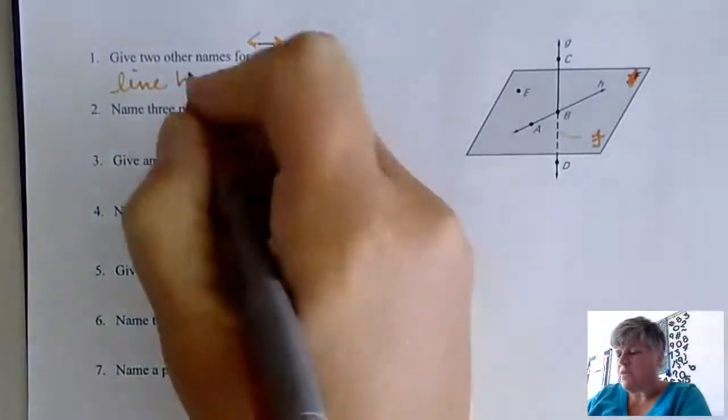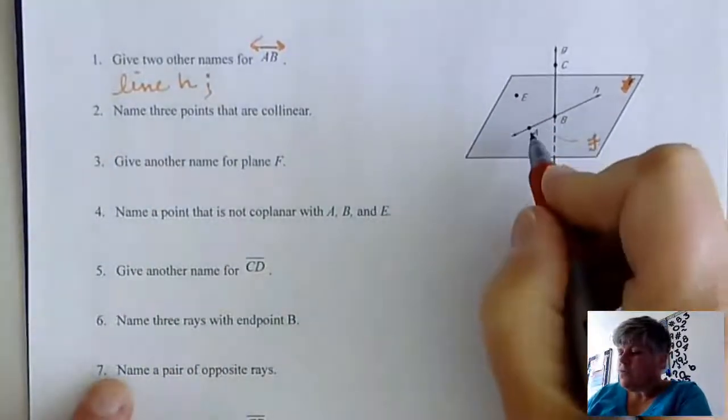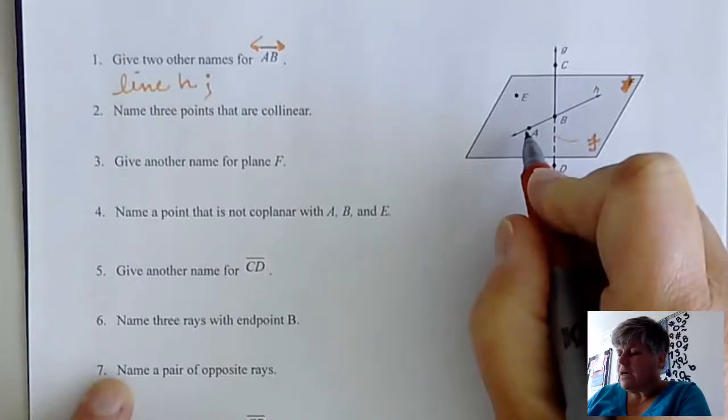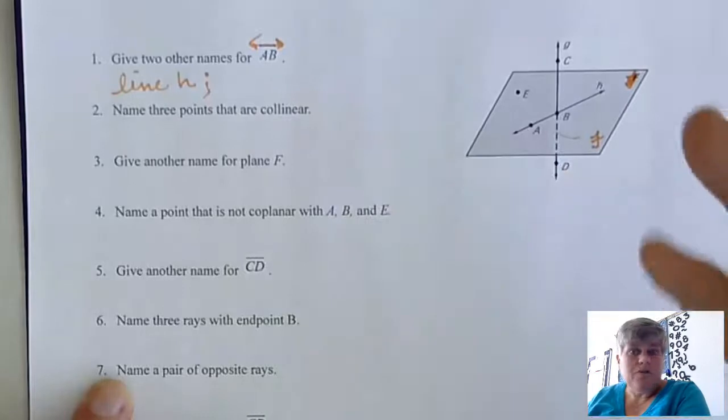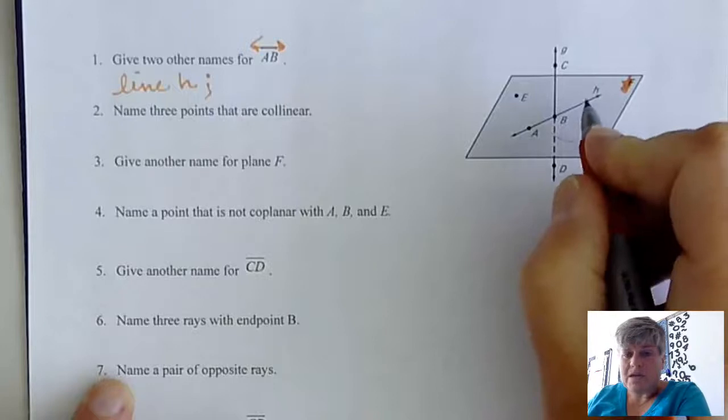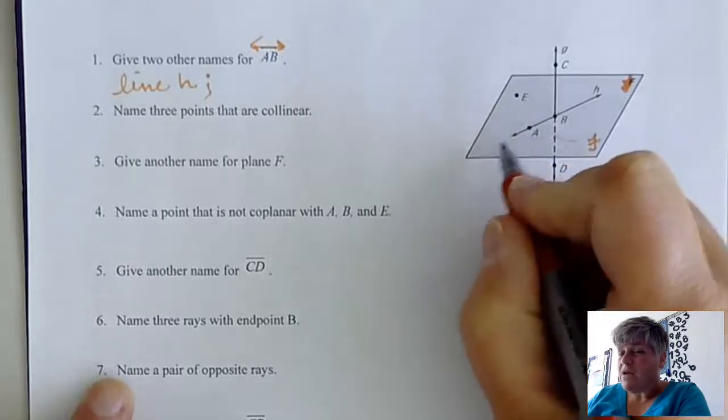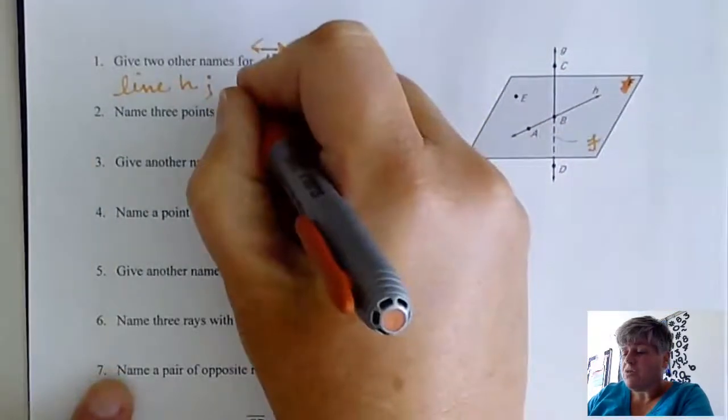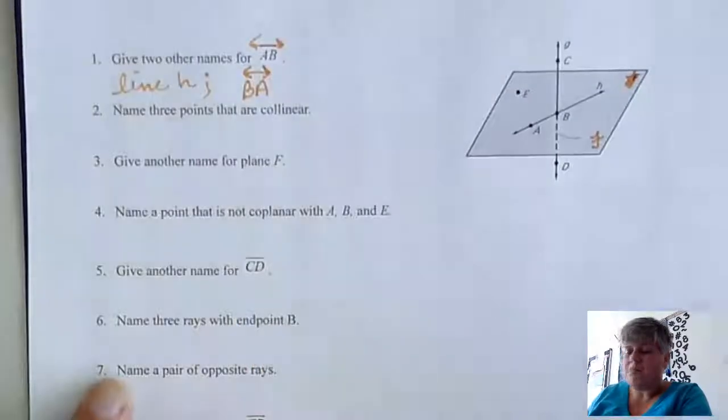So there's one name for that line. The other name I might give is, remember that with a line there's really no direction. There's no start and finish point. So if it goes through A and B, it can go from B to A or A to B because it's just going through it. So another name for that could be line BA.